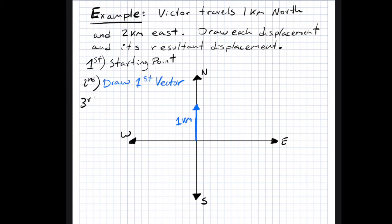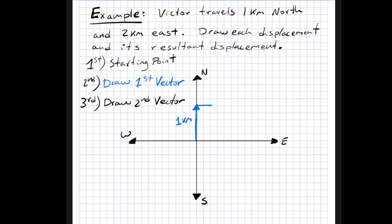The third step is to draw our second vector. As we mentioned before, to draw the second vector, we must place the tail of the second vector at the tip of the first vector. So our second vector travels two kilometers to the east, with the tail of the second vector starting at the tip of the first vector, and we draw it towards the east. This is the second displacement: two kilometers in the eastward direction.